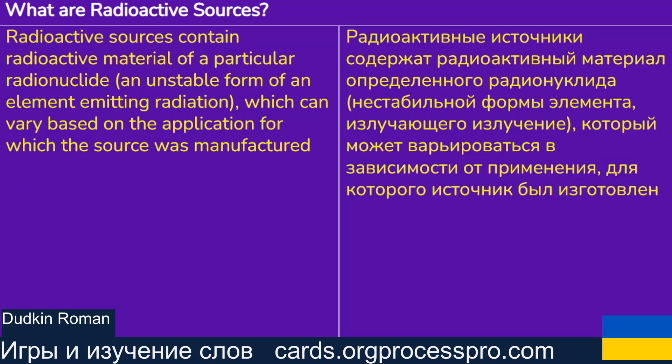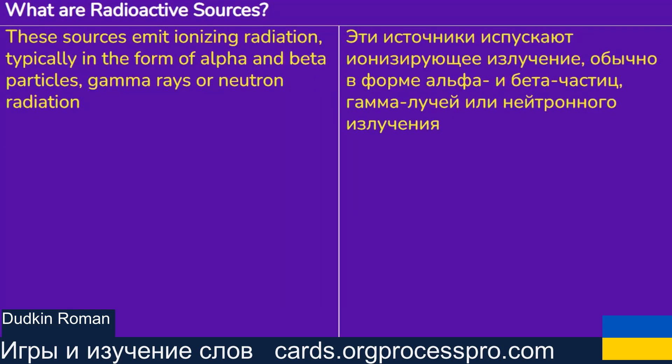What are radioactive sources? Radioactive sources contain radioactive material of a particular radionuclide, an unstable form of an element emitting radiation, which can vary based on the application for which the source was manufactured. These sources emit ionizing radiation, typically in the form of alpha and beta particles, gamma rays or neutron radiation.